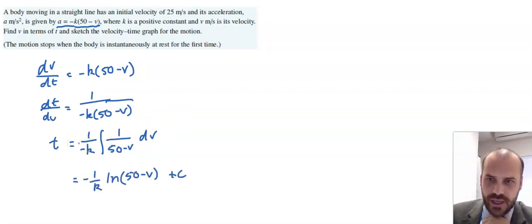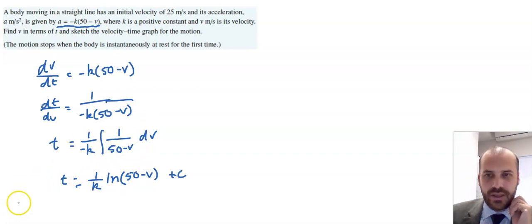It's 1 over negative k. That's fine. Now, this bit here integrates to be negative ln(50 minus v). So, I've got a negative multiplied by, and this is going to be a negative as well. So, it's going to be a positive. We can get rid of that bit right there. Equals 1 over k, ln(50 minus v) plus c.